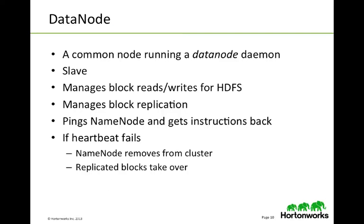The data node is where the data is stored. It's a common node that simply runs the data node daemon — it's a slave to the name node. It manages block reads and writes for HDFS and also manages block replication. It will proactively ping the name node to get instructions — this is known as a heartbeat. If that heartbeat is not received by the name node, the name node will wait for a certain amount of time, and when it determines that data node is no longer responding, it will remove that data node from its list of available data nodes and start to replicate data from that node onto other data nodes.